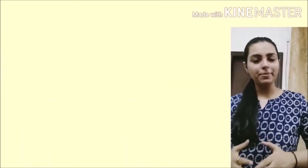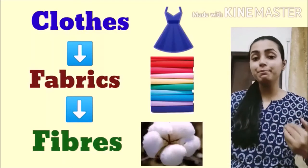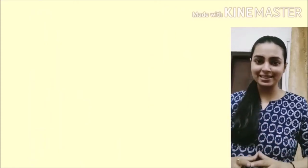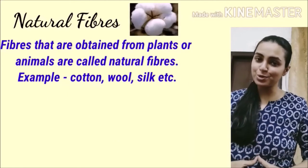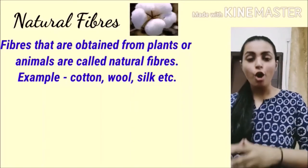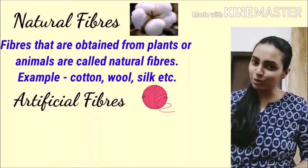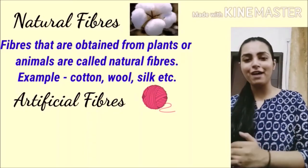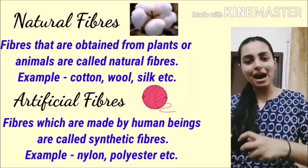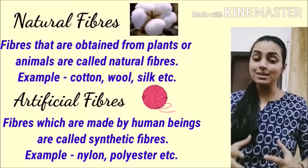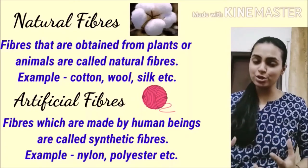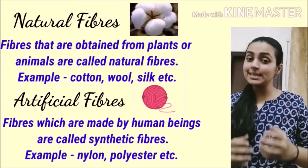Jo bhi hum fabrics pehnte hain, woh fibres se bana hota hai aur woh fibres natural sources se aate hain — be it plant sources or animal sources, unhye natural fibers kaha jata hai. Cotton jo hai woh natural fiber hai, woh plant se liya gaya hai. Wool, silk — yeh bhi animals se liye gaye natural sources hain, isliye unhye natural fibers kehte hain.